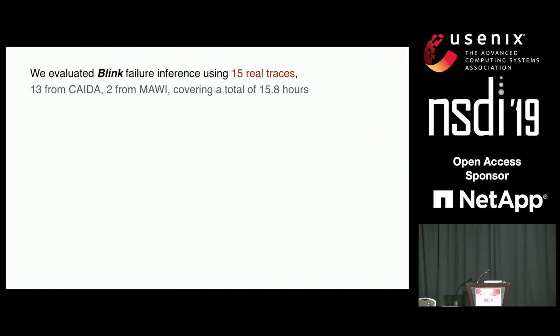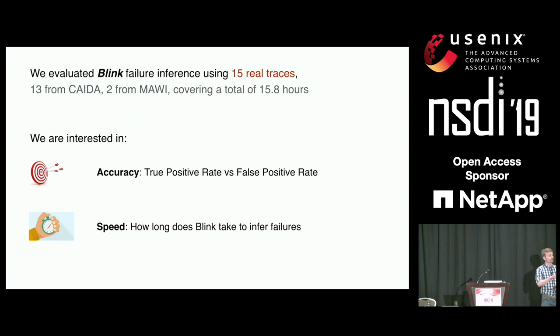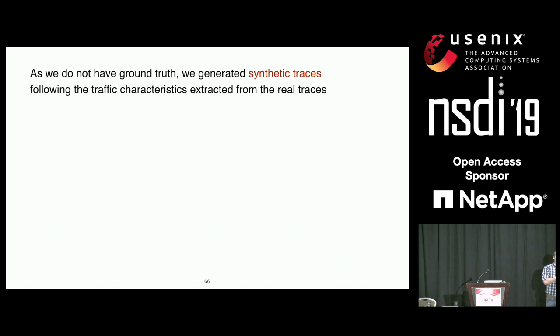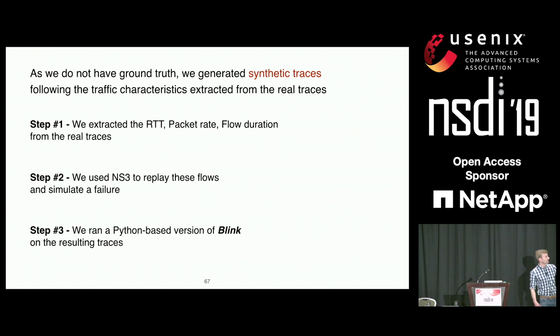Let's evaluate the algorithm Blink uses to detect failures. We used 15 real traces — 13 from Caida and two from MAWI — covering almost 16 hours of data traffic. We're interested in accuracy (true positive rate vs. false positive rate) and speed. Since we have no ground truth on real traces, we extracted traffic characteristics — RTT, packet rates, flow duration — and created synthetic traces using the NS3 simulator, simulating failures. Then we ran our Python-based implementation of Blink on the resulting traces.